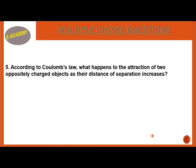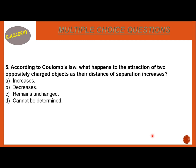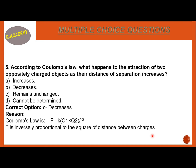MCQ Number 5: According to Coulomb's law, what happens to the attraction of two oppositely charged objects as their distance of separation increases? If we increase the separation between two charges, the attraction will be affected. The correct option is B, decreases. The reason is Coulomb's law: F = K × Q1 × Q2 / R². F is inversely proportional to the square of the distance between charges. So as the distance increases, force will decrease respectively.